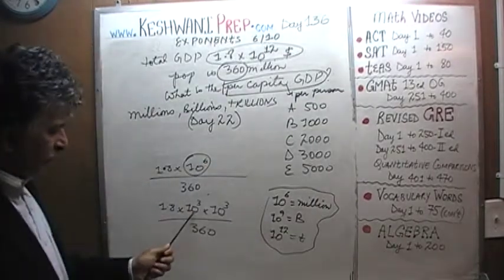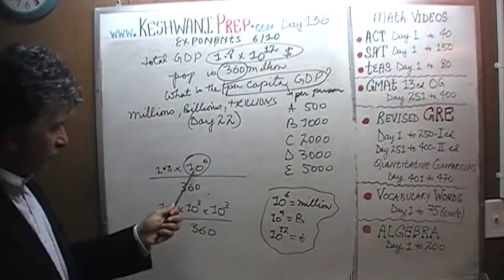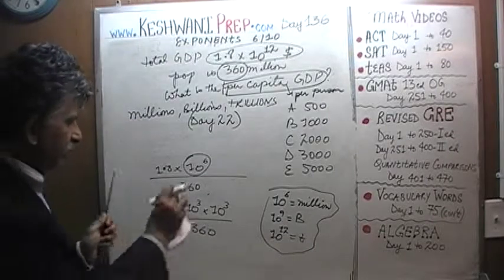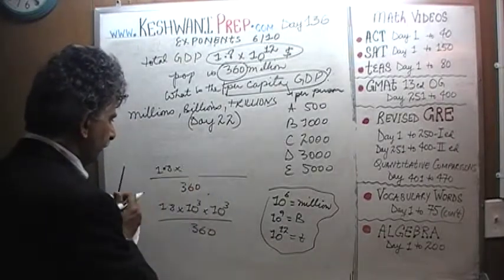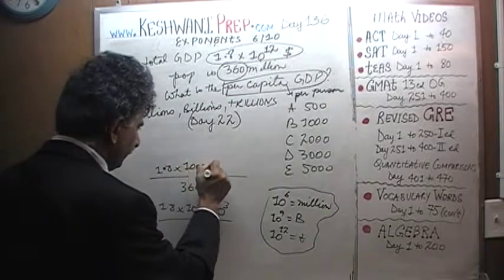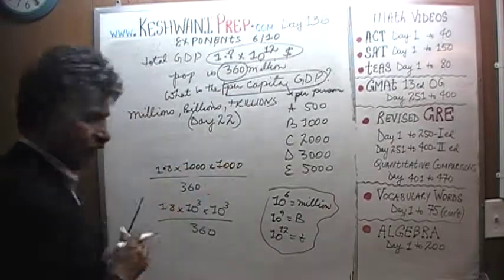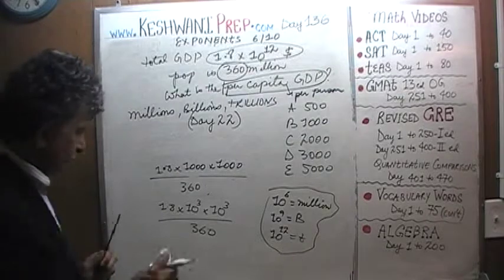10 raised to 6 is, we're going to write this as 10 raised to 3 times 10 raised to 3, which is right here. 10 raised to 3 times 10 raised to 3, which can be written as 1000 times 1000. That's your 10 raised to 6. Are you with me? Let's continue.